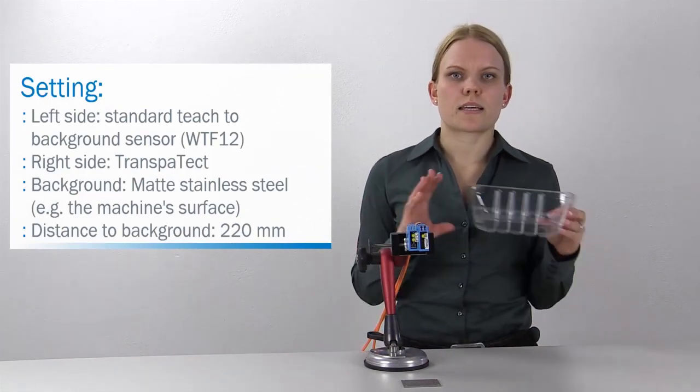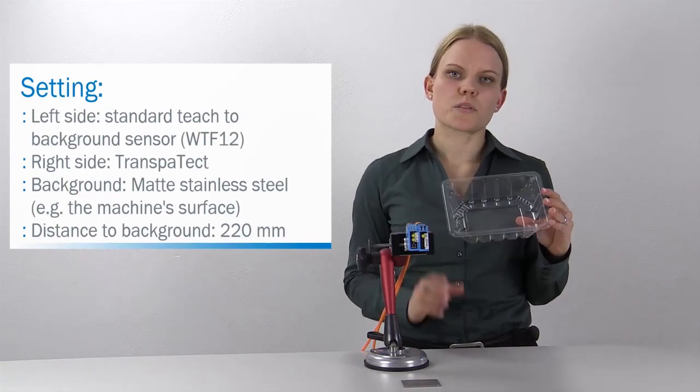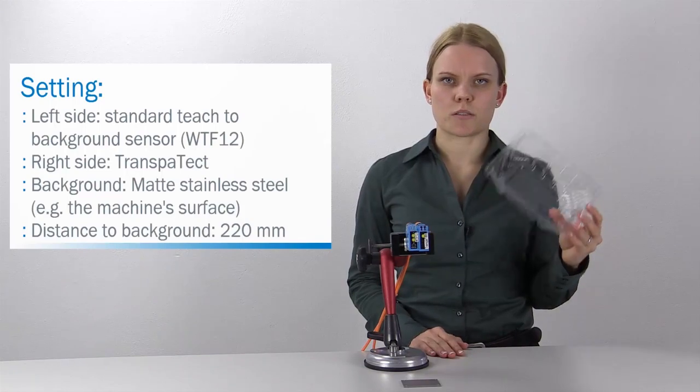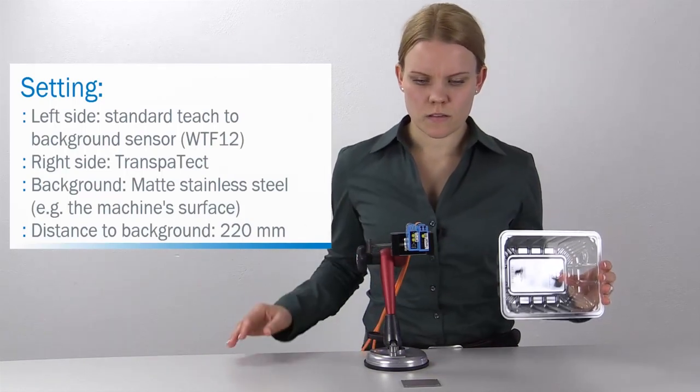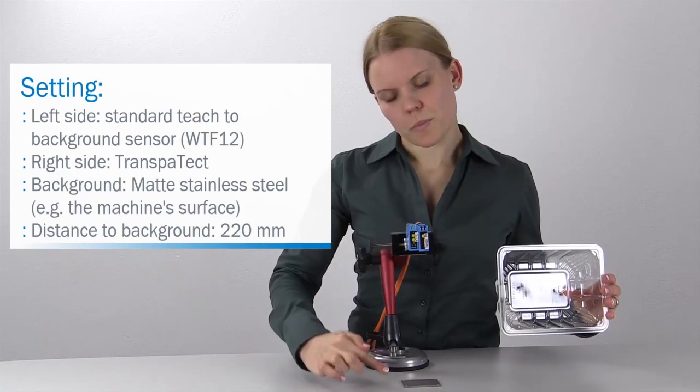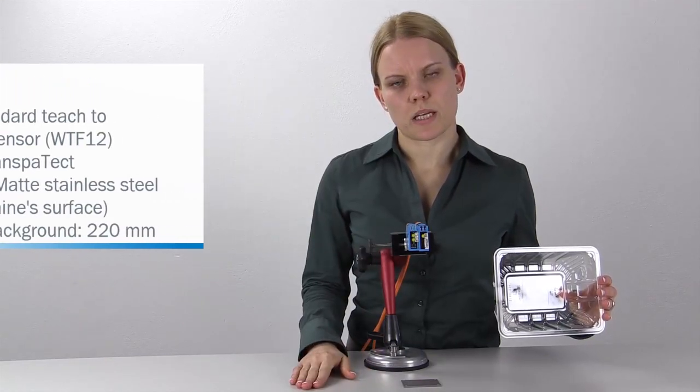To show the difference in detection reliability, I'm using a transparent tray, commonly used in the food industry. The distance between sensor and background is 220 mm.